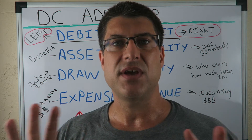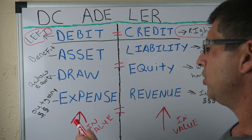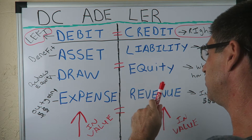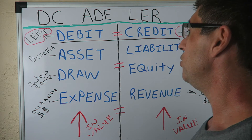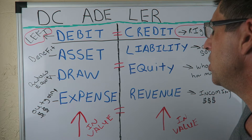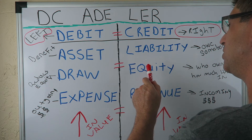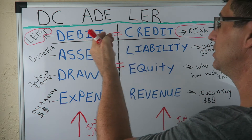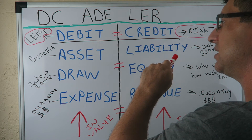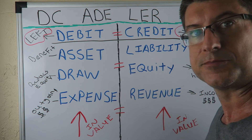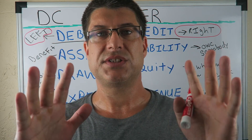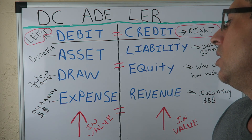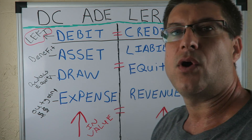A couple caveats: you're not going to have a lot of decreasing expenses or decreasing revenues. You won't see much decreasing withdrawals or decreasing equity. But you will have a lot of decreasing assets and decreasing liabilities, so you might see an asset on the credit side and a liability on the debit side. Think of it as a mirror image. Now you pretty much know where things land on the whole mapping system.